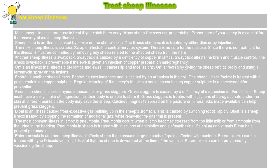Footrot is another sheep illness. Footrot causes lameness and is caused by an organism in the soil. The sheep illness Footrot is treated with a paste containing copper sulfate. Regular cleaning of the sheep's feet with a solution containing copper sulfate is recommended for prevention.